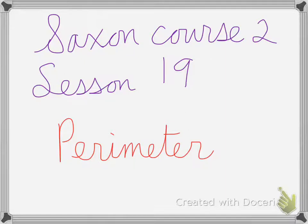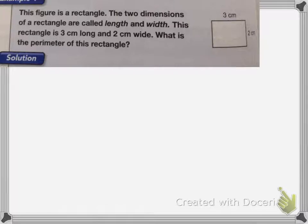Hey, Saxon Course 2, Lesson 19 is on perimeter. This figure is a rectangle. The two dimensions of a rectangle are called length and width. This rectangle is 3 centimeters long and 2 centimeters wide. What is the perimeter?